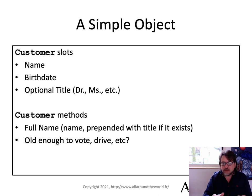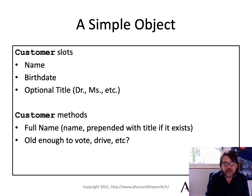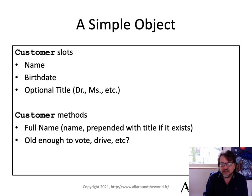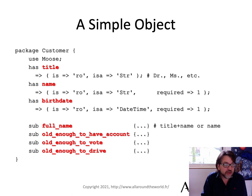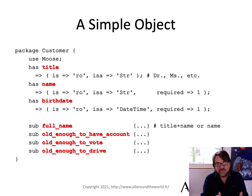Let's think about a simple object — a customer object. It has slots of name, birth date, and an optional title like 'Dr.' or whatever. Then we have some methods: you can get the full name, which is a name prepended with a title, and predicate methods like 'are they old enough to vote' or 'drive,' et cetera. Here are the three slots — title, name, and birth date — and then our methods: full name and the predicate methods I mentioned. This is very simple, very clear, and nothing unusual about it.